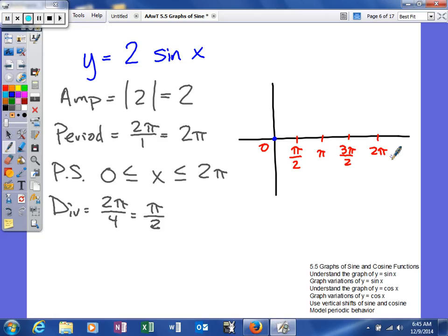So it's going to be 0, maximum. Our maximum value is going to be based on our amplitude. The normal maximum value of sine and cosine is 1. But of course, this is going to be multiplied by that. So 1 times 2 will give us 2.